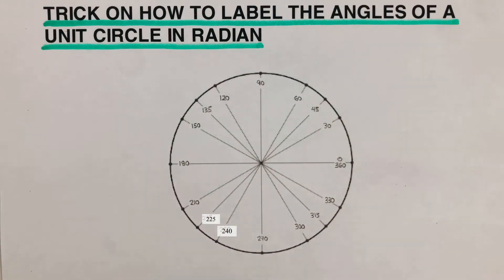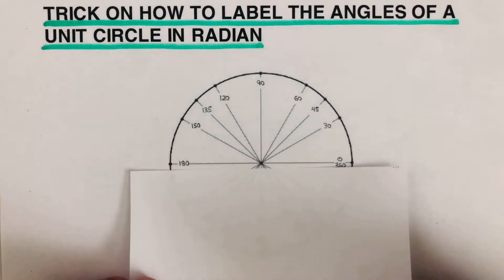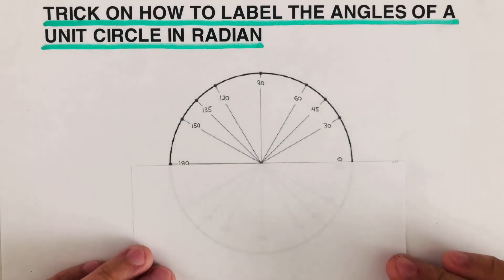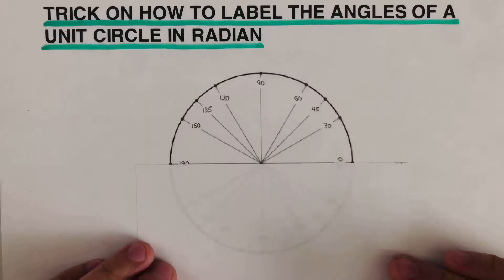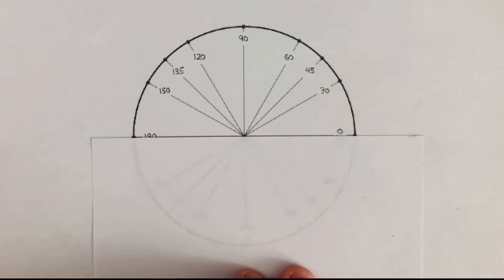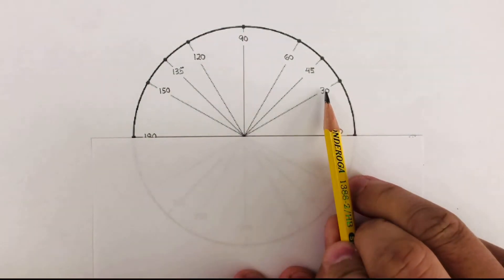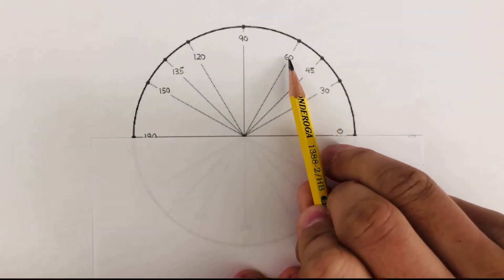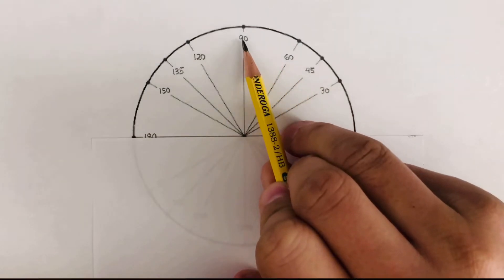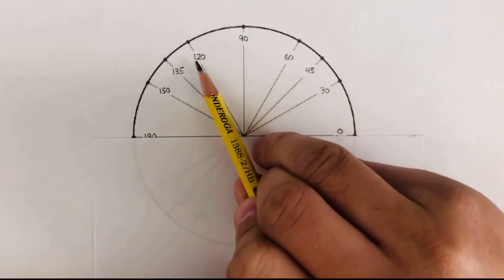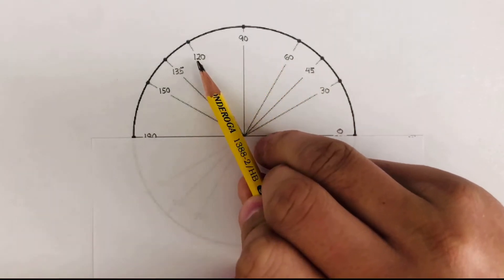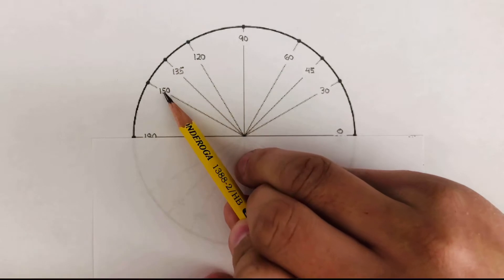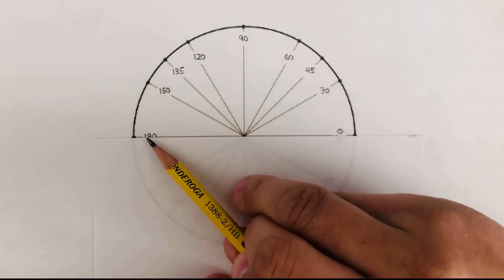First, we're gonna focus on half of the circle — that upper part right there. As you can see here, this is divided by 30. So we start with 30: 30 plus 30 is 60, plus 30 is 90, plus 30 is 120, plus 30 is 150, plus 30 is 180.